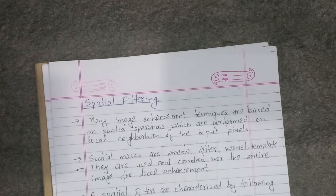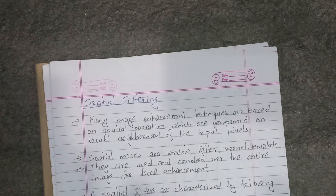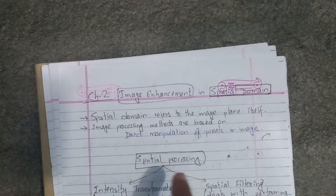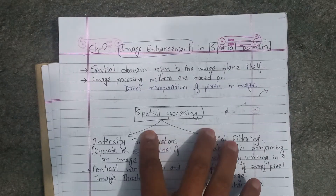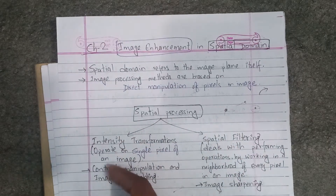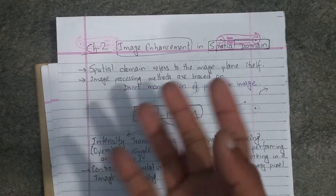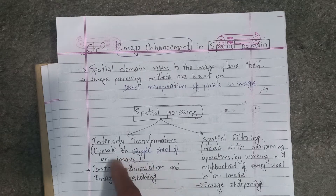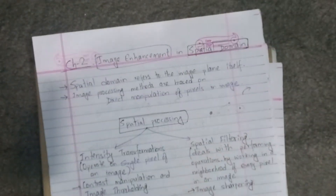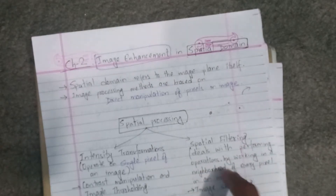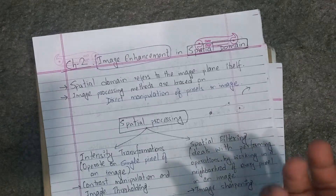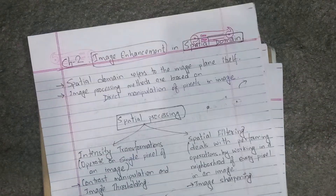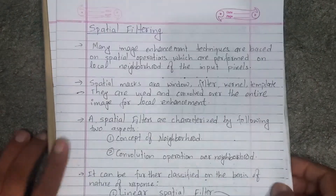Welcome back. This is spatial filtering — Chapter 2 on intensity transformation and point processing. Spatial filtering deals with performing operations by working in a neighborhood of every pixel, considering each pixel's neighborhood.